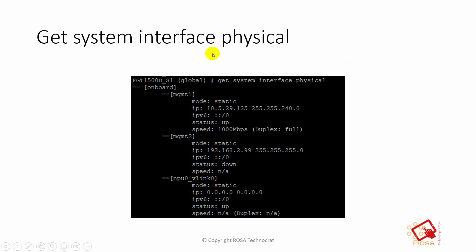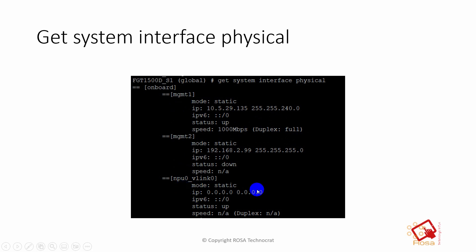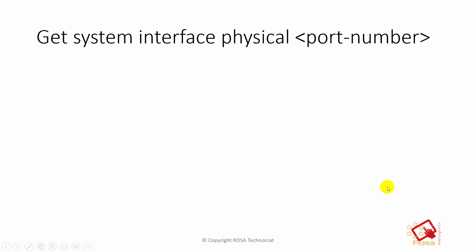The first command — 'get system interface physical' — when you run it without specifying a port number, gives information about all ports on the firewall. For example, you can see the management 1/1 interface, its IP addressing mode (static), the IP address, speed, duplex, and the negotiated values for duplex and speed. It will list management 1/2 and all additional interfaces the same way.